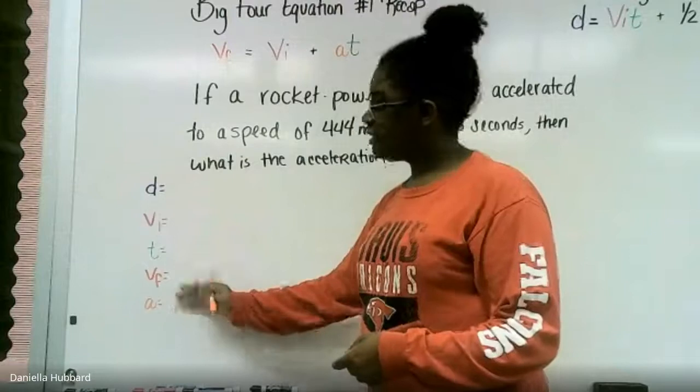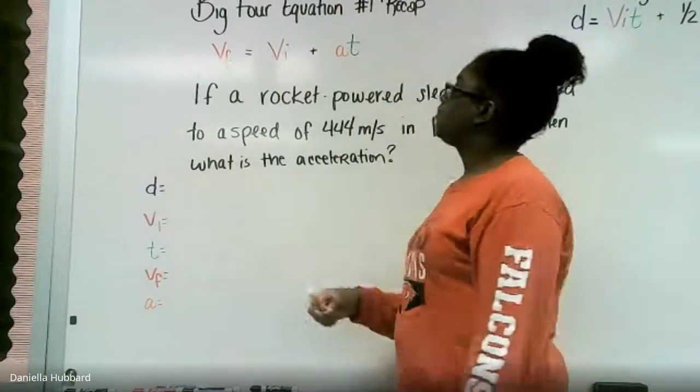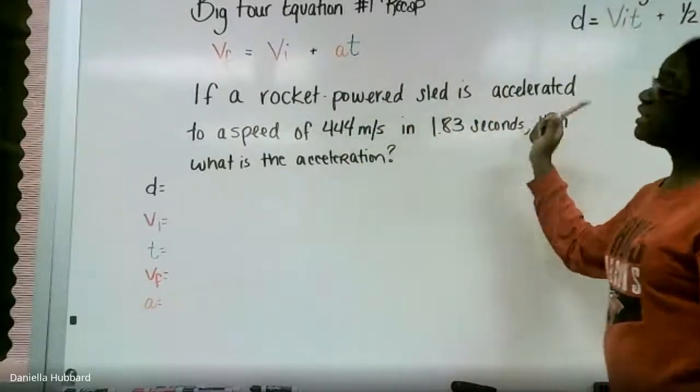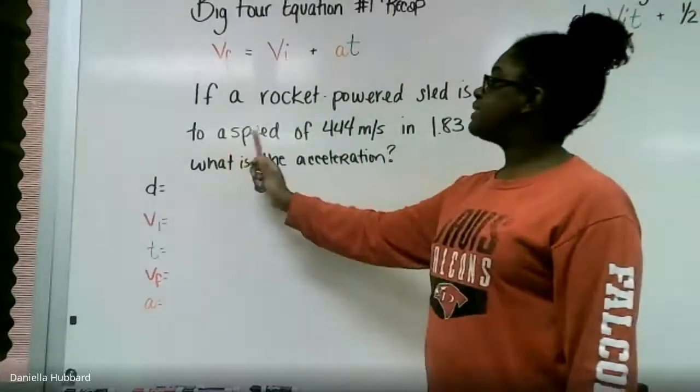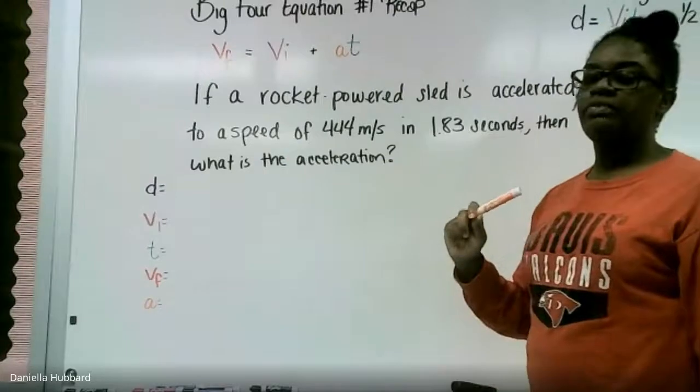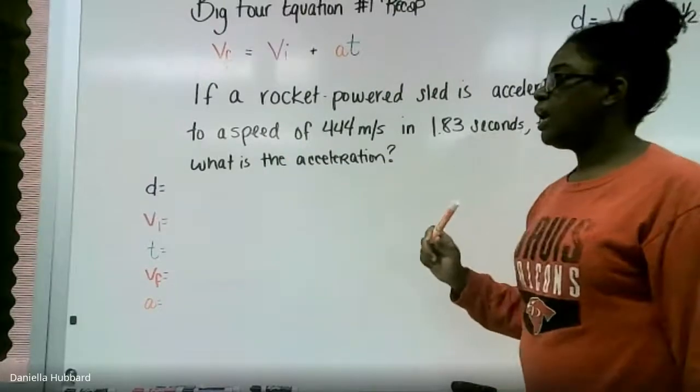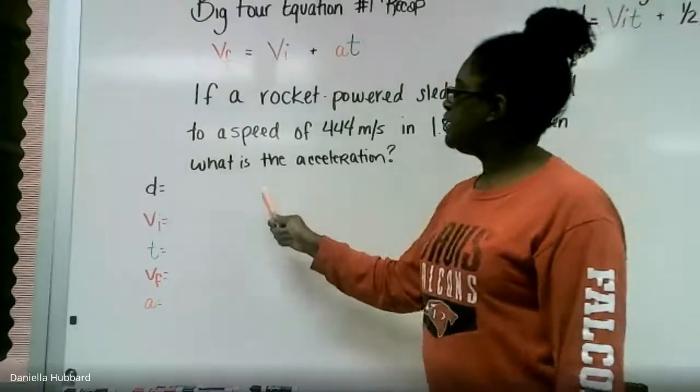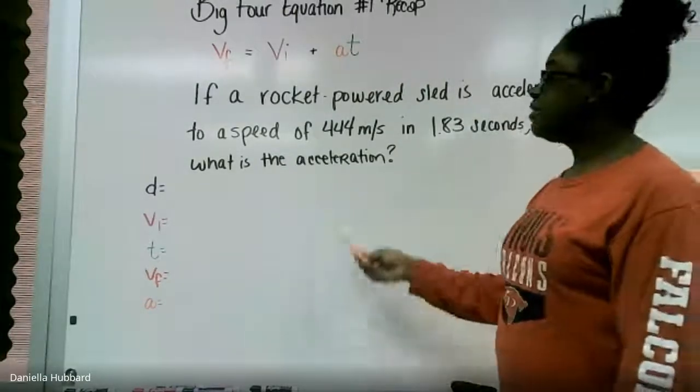And I will explain why I did this as we go through the problem. So our problem says if a rocket-powered sled is accelerated to a speed of 444 meters per second in 1.83 seconds, then what is the acceleration?